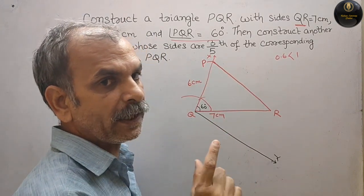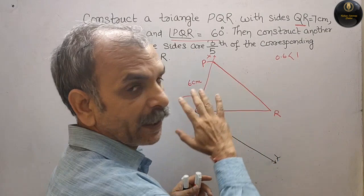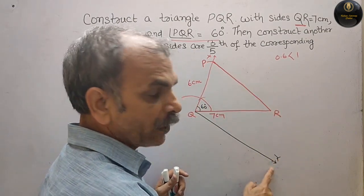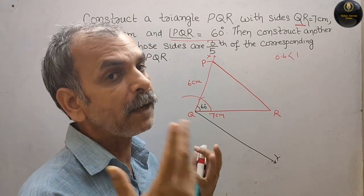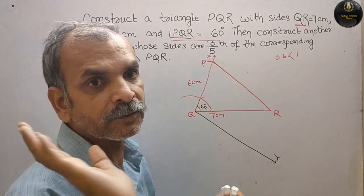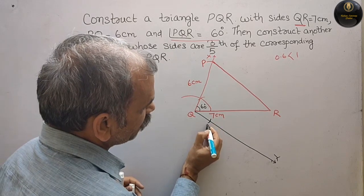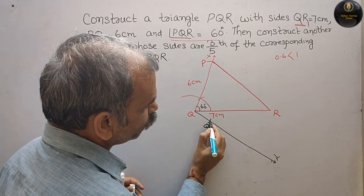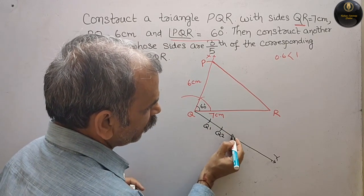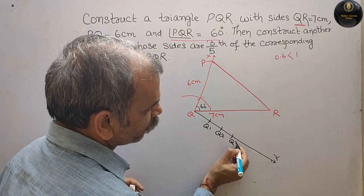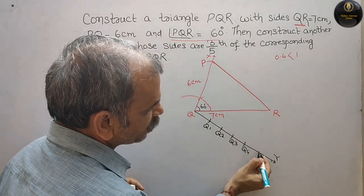तो अब next step: compass के ऊपर take any measurement, और उसको यह जो line है हमारी Q to Y, इसको cut करना है — कितने parts में? देखो maximum is 5, तो 5 parts में हम उसको cut करेंगे। First cut किया — this is your Q1; second — Q2; फिर Q3; फिर Q4; next is your Q5।